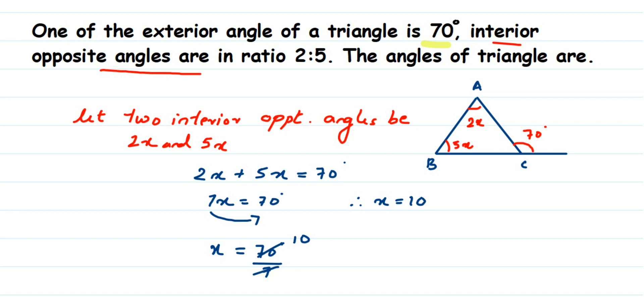Now using this, we have to find out the other angles. So here two angles, we know the ratio 2 is to 5. So it will be 2x and 5x. So 2x means it will be 2 into 10, which is equal to 20 degrees. Similarly, 5x will be equal to 5 into 10, which is 50 degrees. So we have got two angles, 20 and 50.